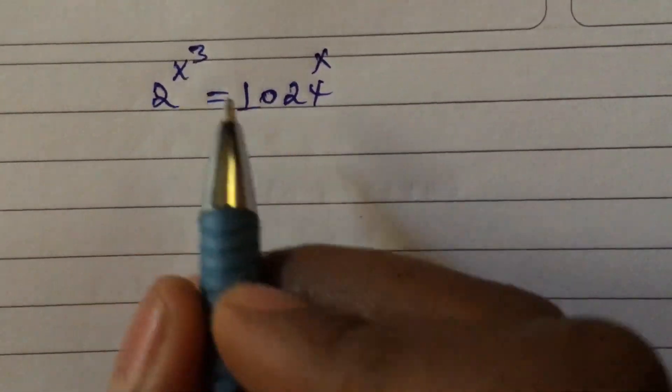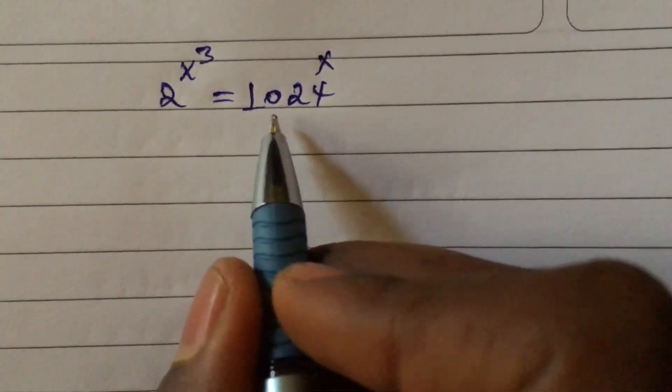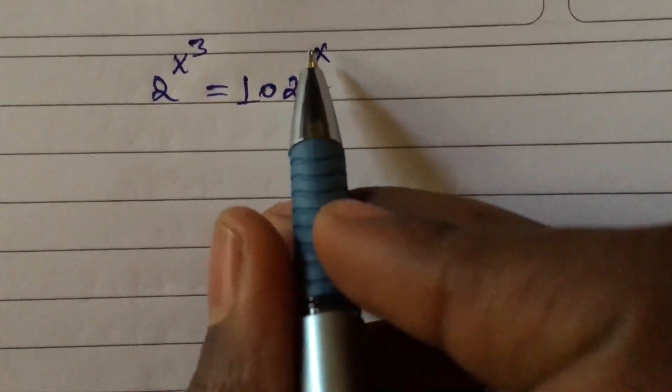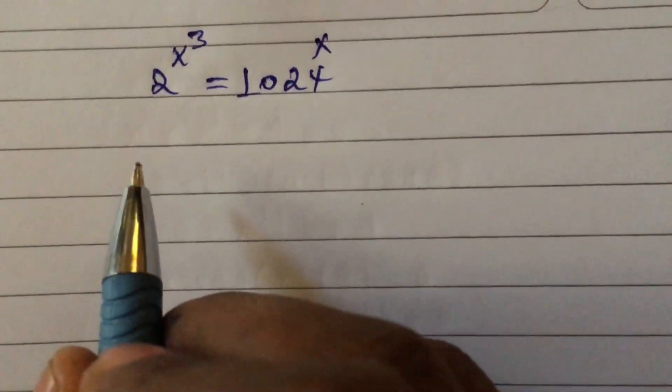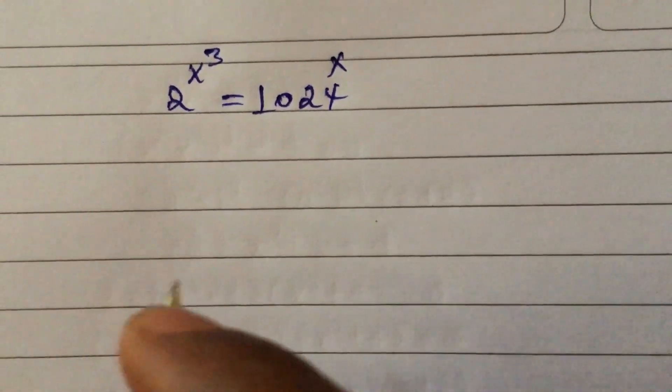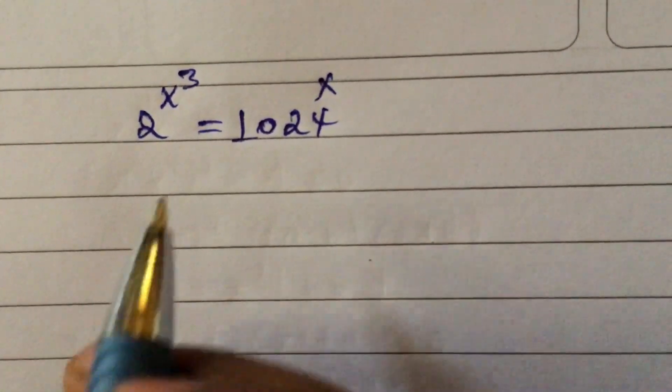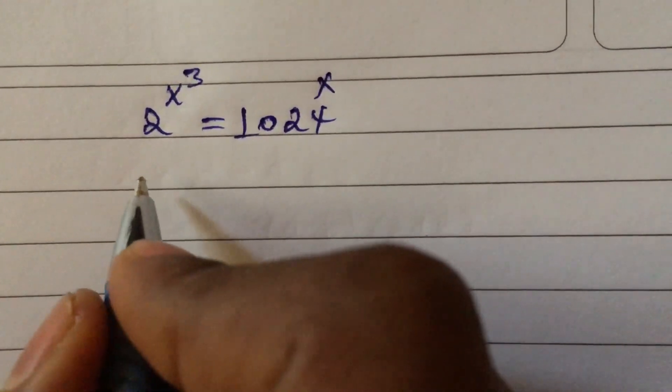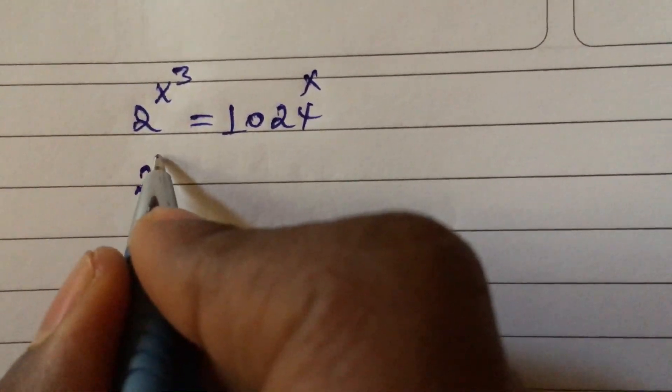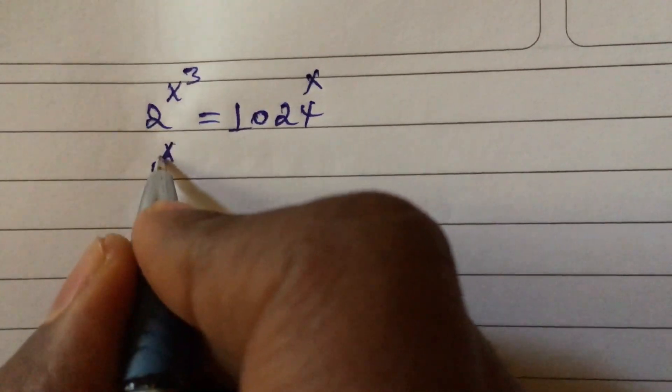2 to the power of x cubed equals 1024 to the power of x. How to solve this equation? So 2 to the power of x cubed...